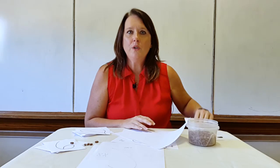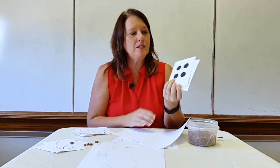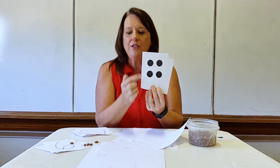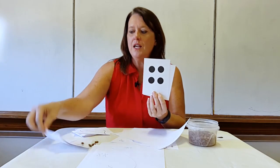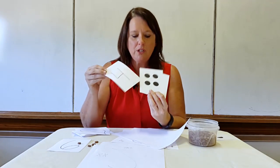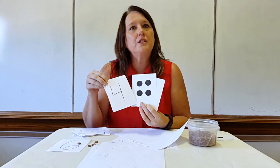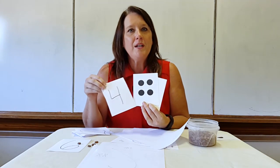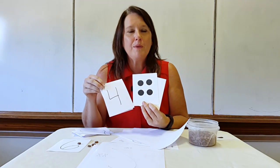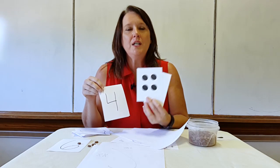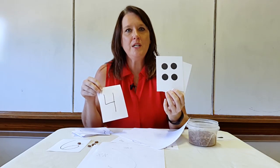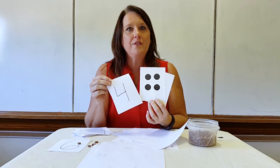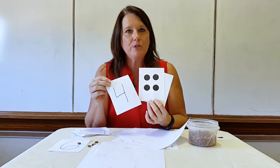As an assessment tool, I might use my dot cards — have the children count the dot cards and match them with a picture. This is one way that I teach the children in my early childhood classroom to connect counting and numbers — the actual symbols.